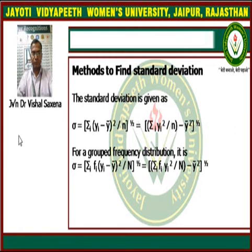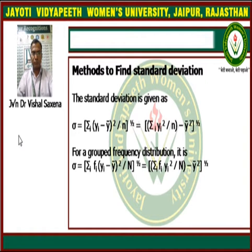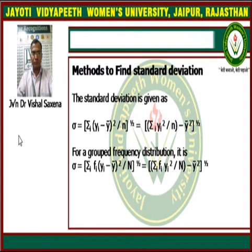The formula for standard deviation is: sigma equals the square root of summation of (yi minus y-bar) squared upon n, which equals the square root of summation yi squared upon n minus y-bar squared. This is the formula defined for the individual series, meaning where frequencies are not given. If frequencies are given, then this formula needs to be changed.